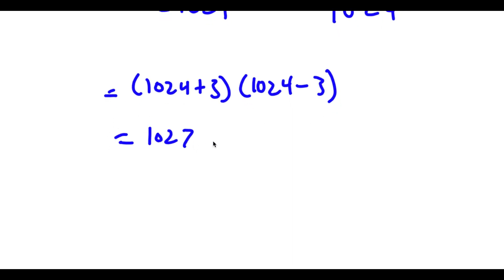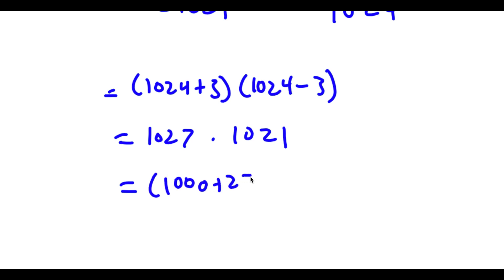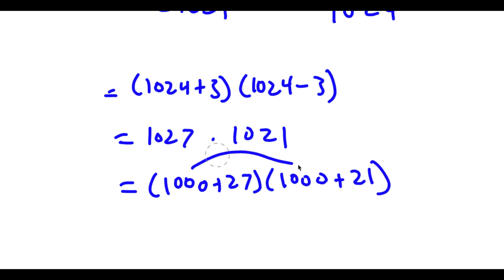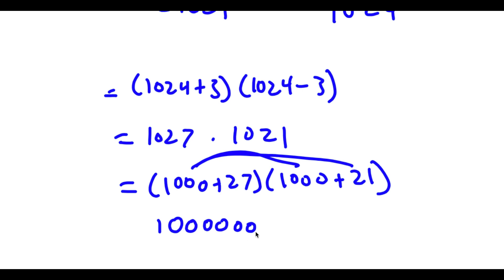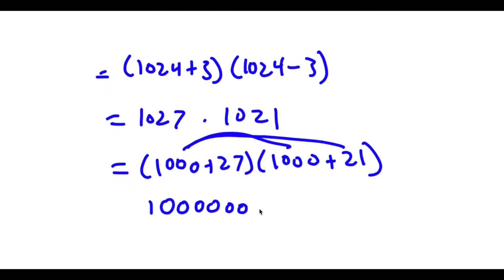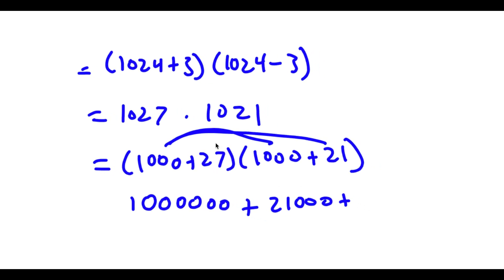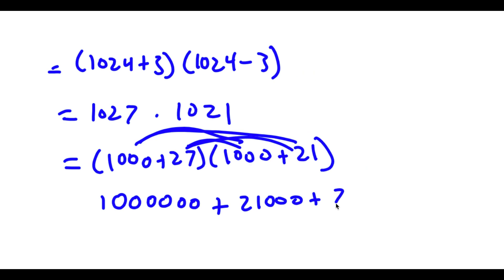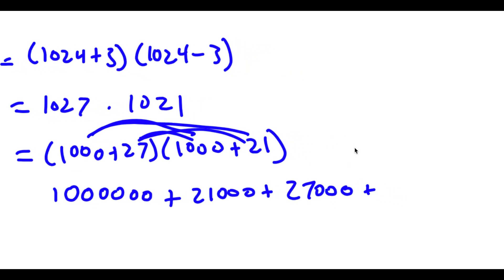1024 plus 3 is 1027 and 1024 minus 3 is 1021. Now I can rewrite this as 1000 plus 27 times 1000 plus 21, and now it's much easier to solve. I can first distribute the 1000: 1000 times 1000 is 1,000,000, and 1000 times 21 is 21,000. Now distribute the 27: 27 times 1000 is 27,000.